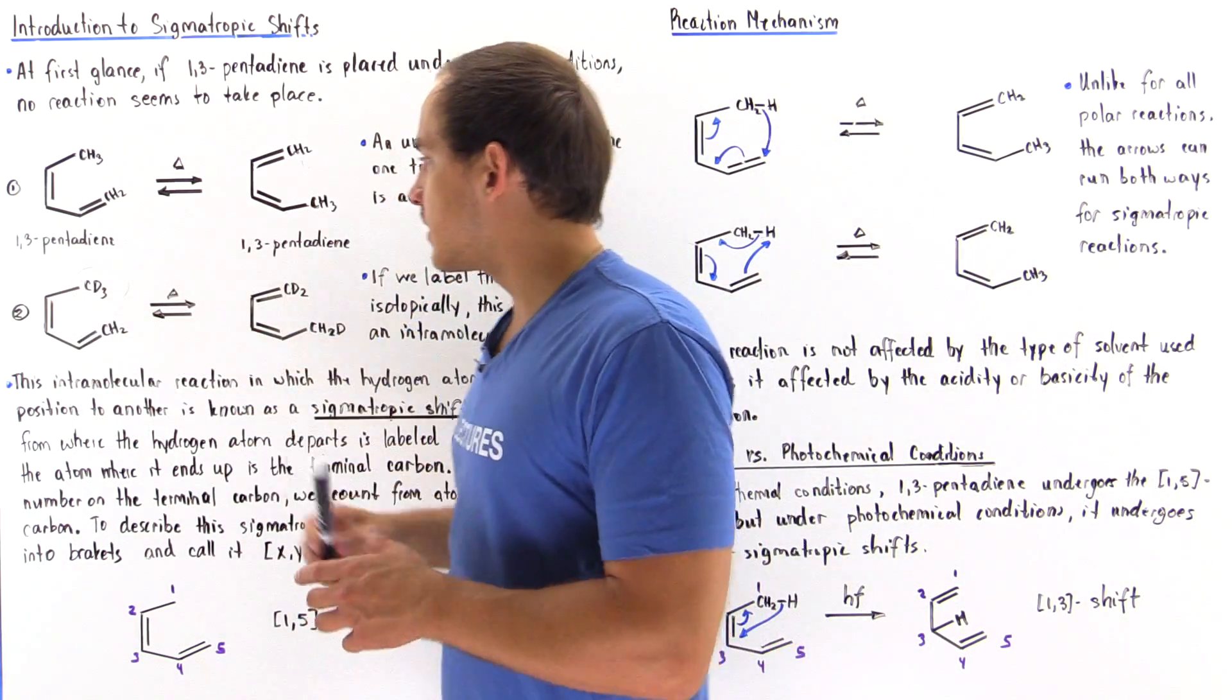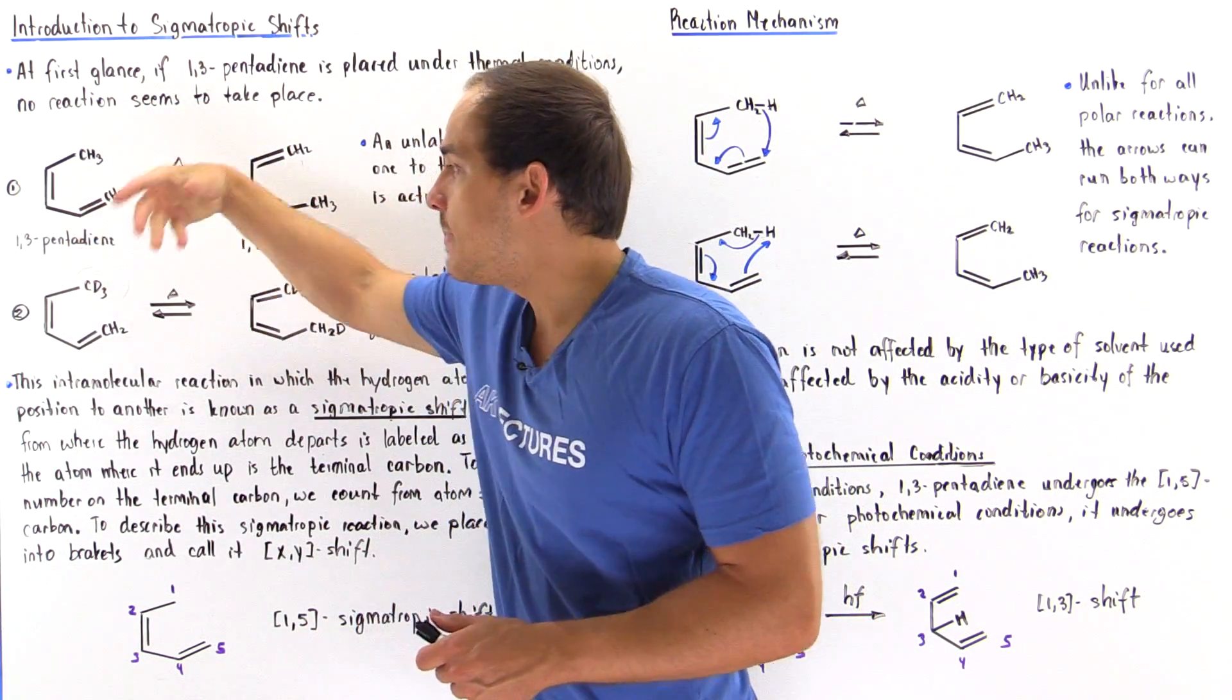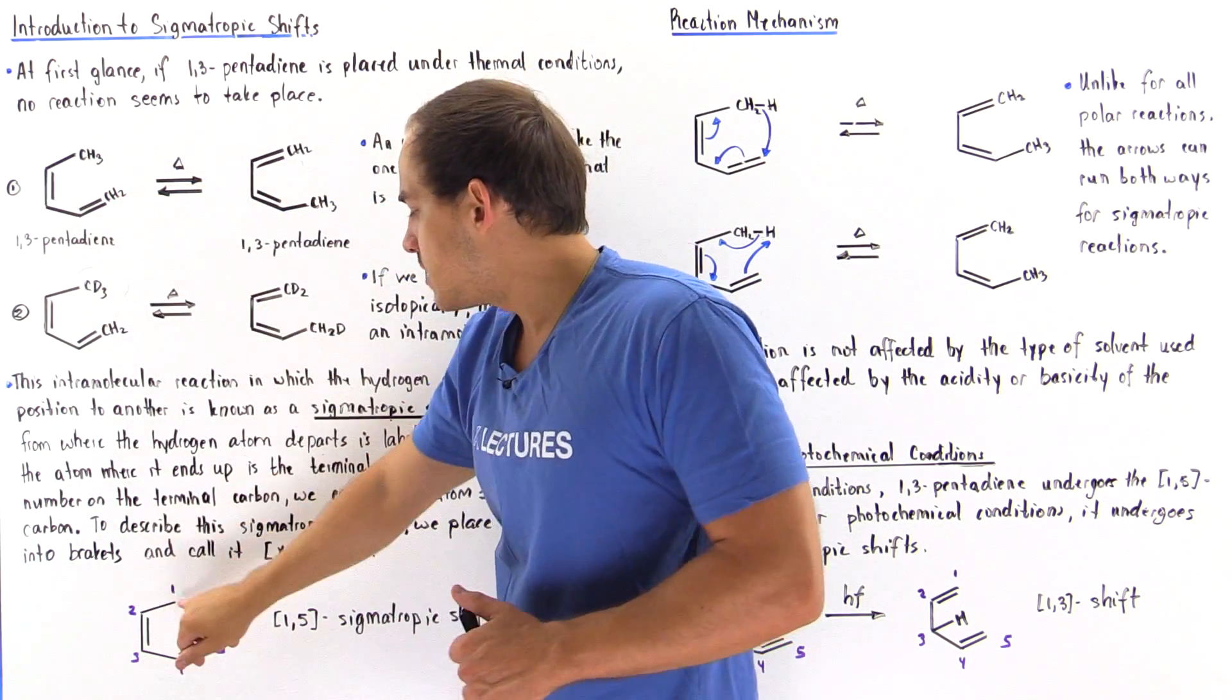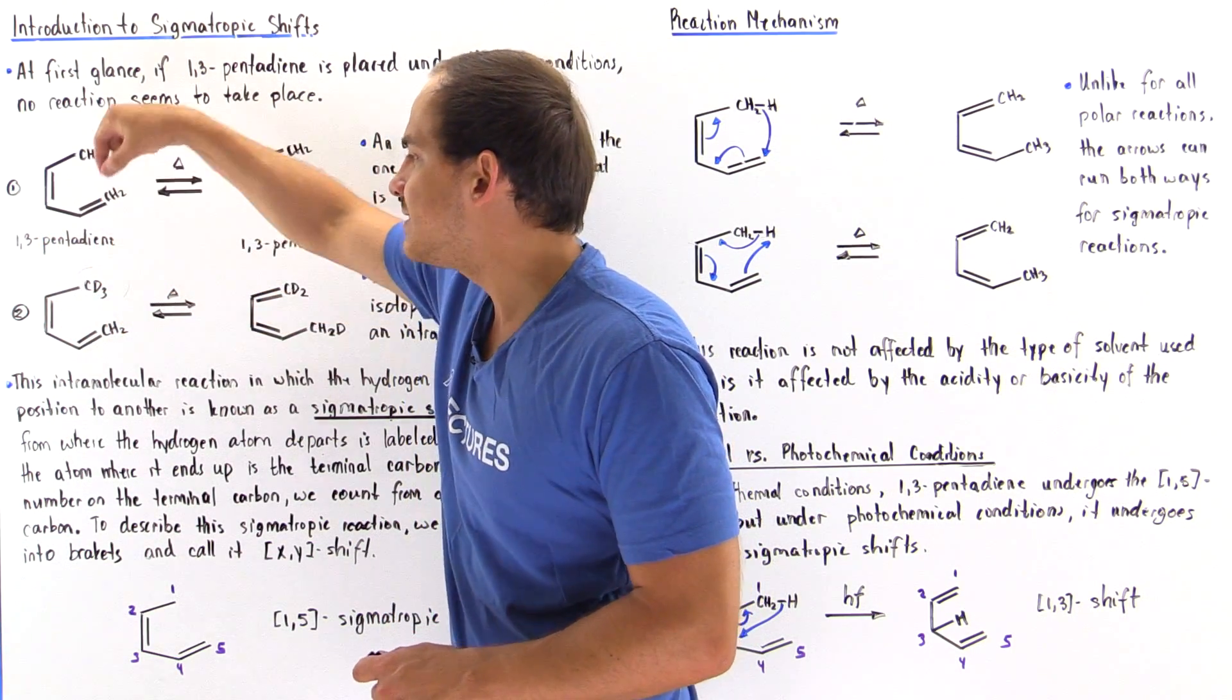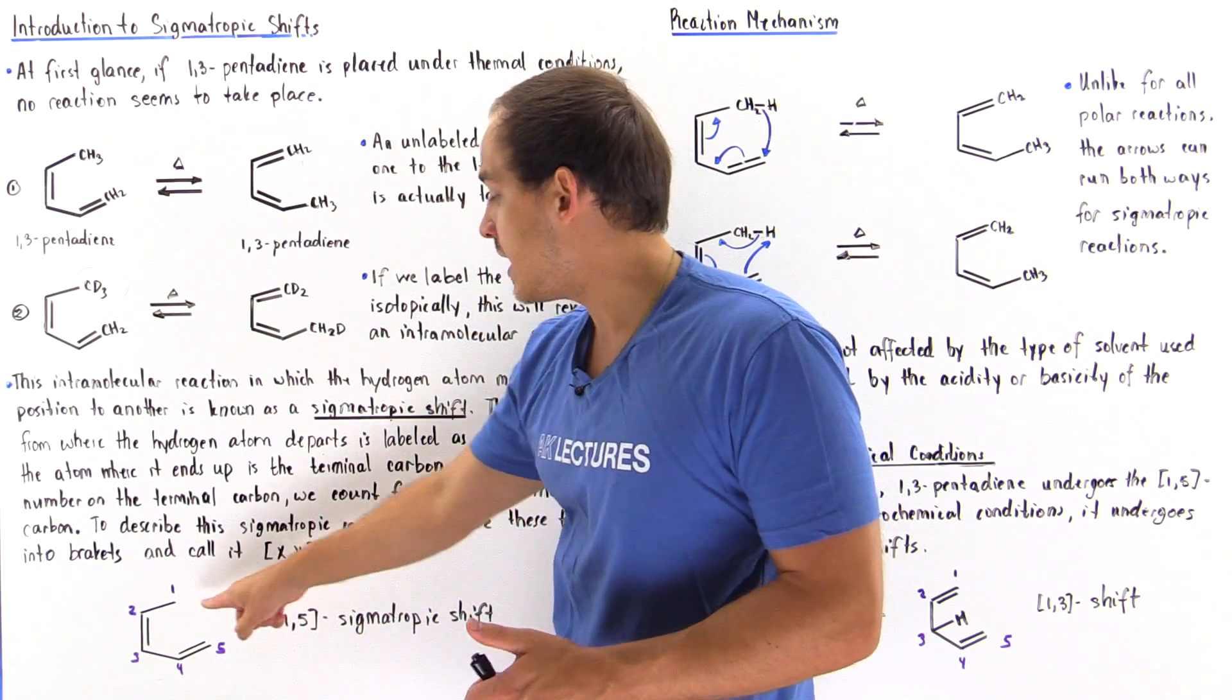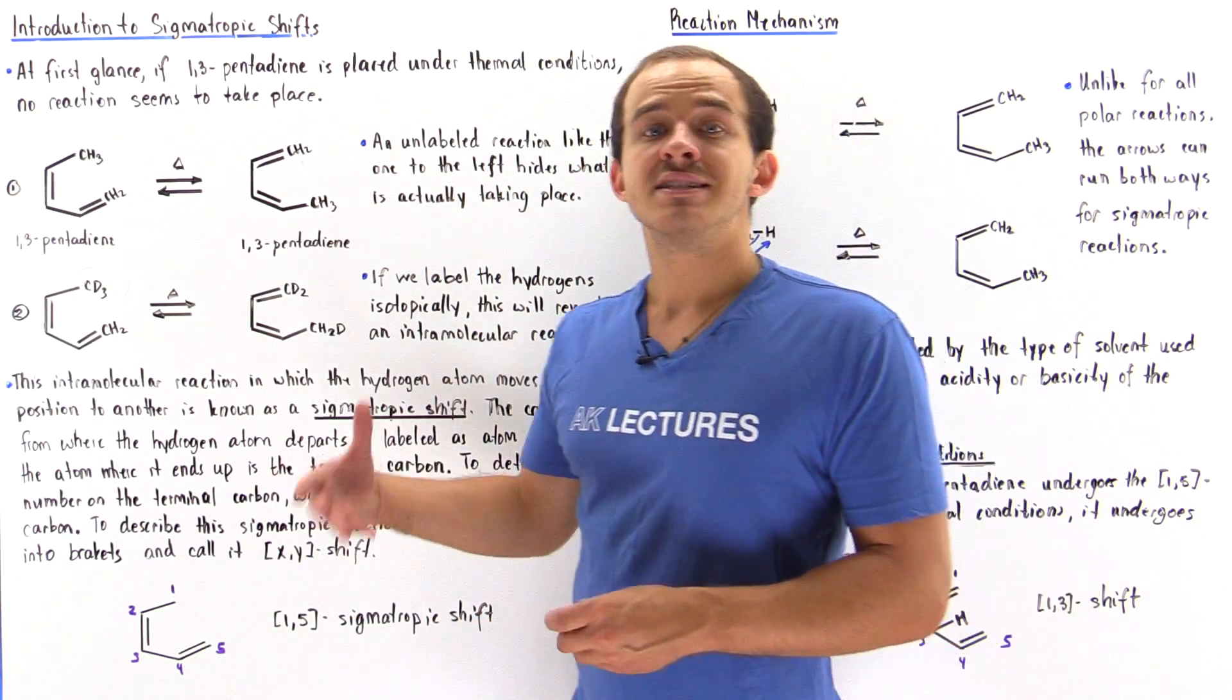So for this particular case, our H atom, in this case deuterium, basically begins on this carbon and so we give it the value one. And then we begin counting all the way up to the carbon where our D basically moves on to. So that is the fifth carbon, so we have a 1,5 sigmatropic shift taking place.